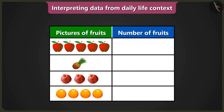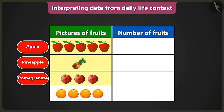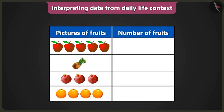Which pictures are there in the column of fruits in the table? There are pictures of apple, pineapple, pomegranate, and orange. Now have you understood that the data given is about which fruits? But how will I know the number of fruits without counting them? It is easy. How many pictures of apples are given in this table? There are five pictures of apples. So we have to write the number of apples — five — in the column of number of fruits.